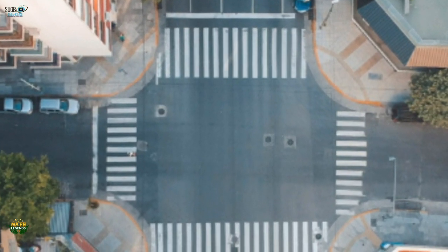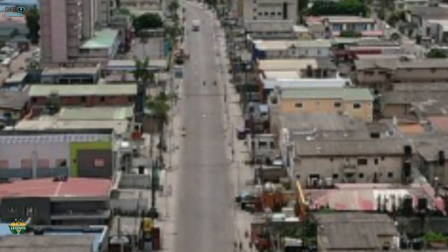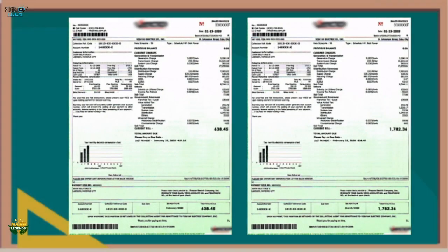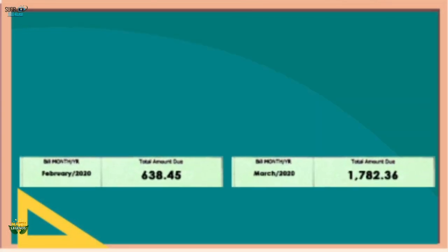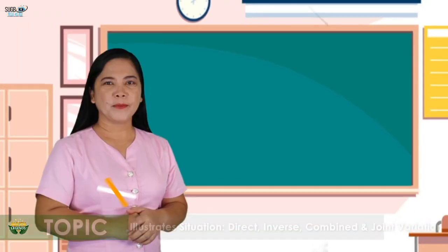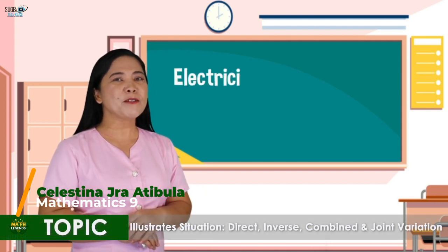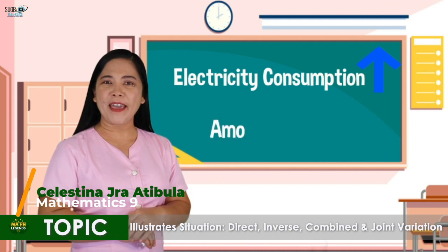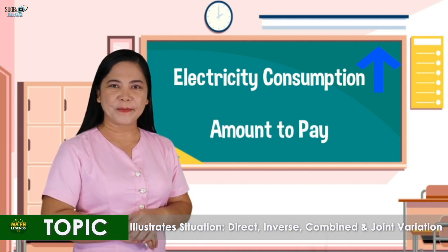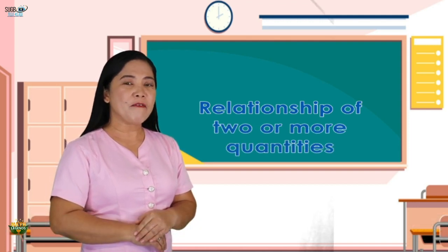During the lockdown, almost all of us were forced to stay at home. As a result, electricity consumption increased. The Santos family experienced the same. Here are the electricity bills for the previous month and this month. The electricity consumption increased and the amount to pay also increased.